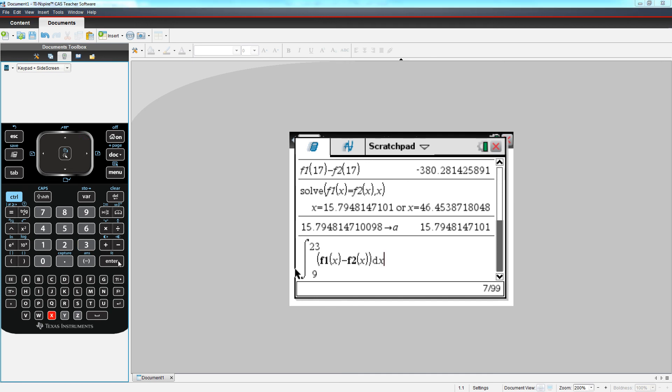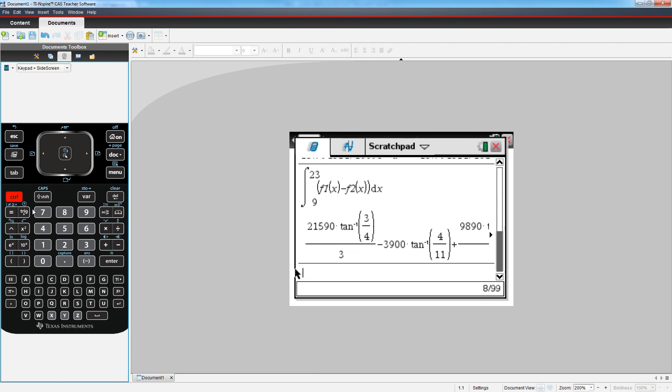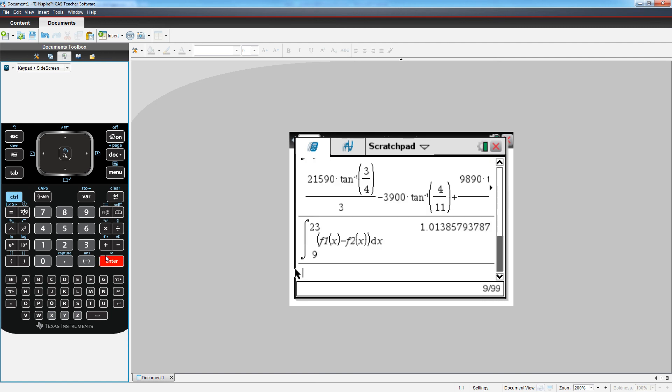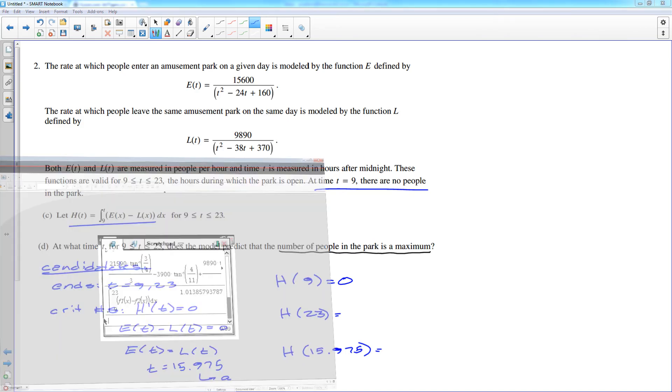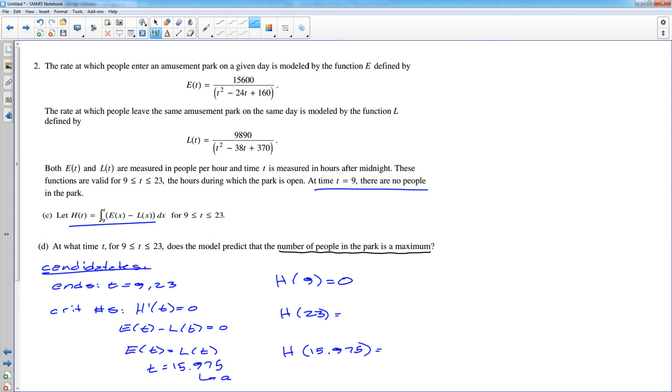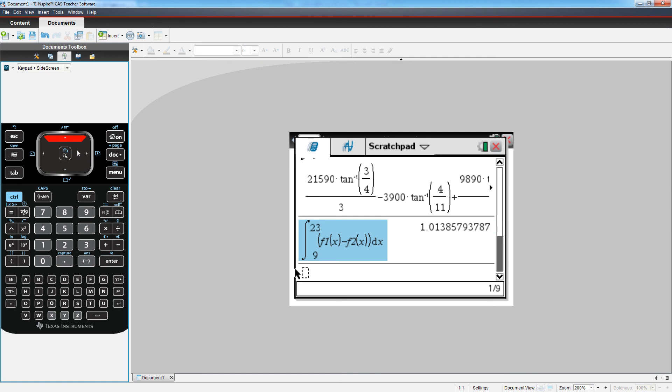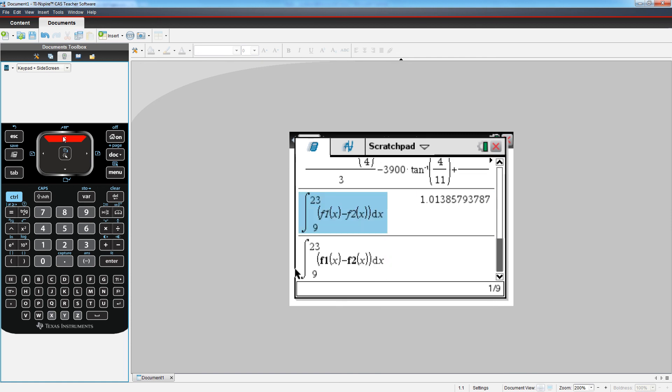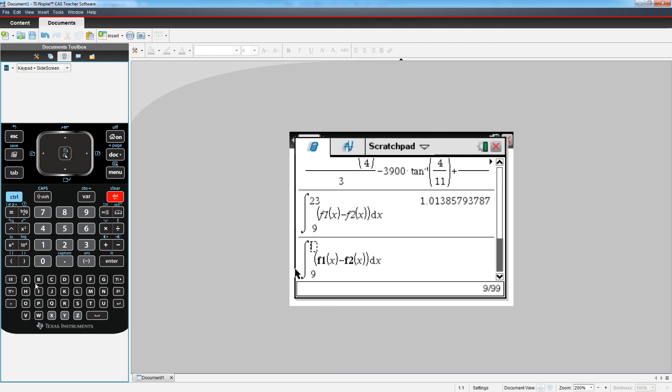So I'm going to do the antiderivative from 9 to 23 of the function e of t minus l of t. All right. And hit enter. Hit control enter. And we get 1.013. Somebody left their kid on the little kiddie rides. So 1.01. And then if I do 15.975, which I stored as a. So I'm going to go up and bring this down. And I'm going to say, all right, well, let's change my upper limit of integration to a, because that's how I stored my critical number. You always want to store answers. Control enter.